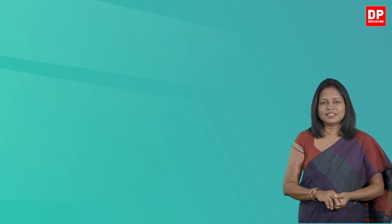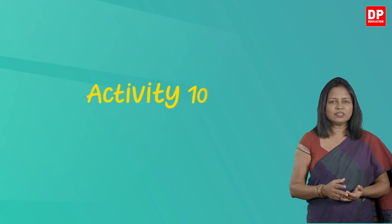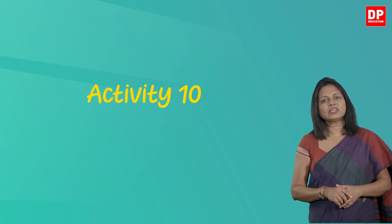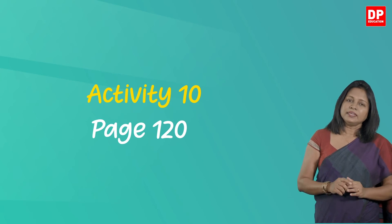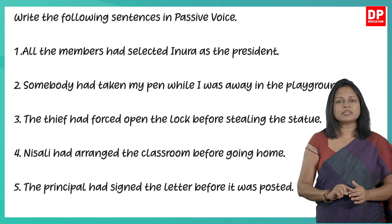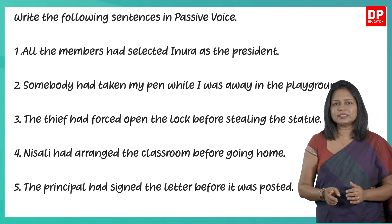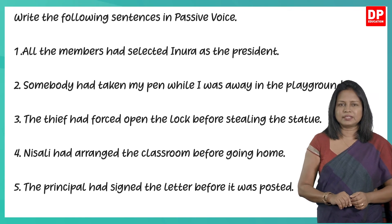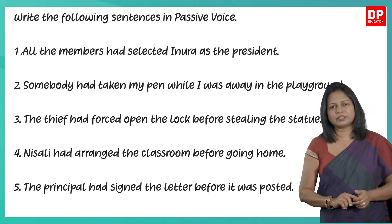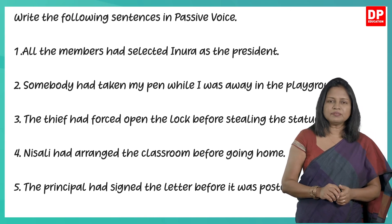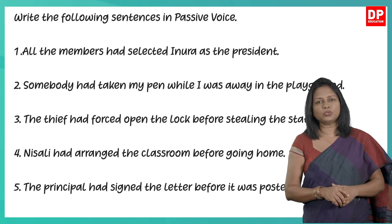Now let's do an activity from the textbook to practice what you have learned. This is Activity 10 on page 120 of your textbook. Here you have five active voice sentences in past perfect tense, and you have to write them in passive voice. Pause the video and do it now.